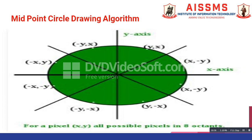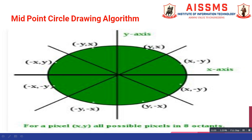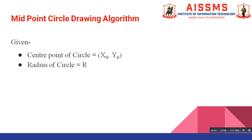This 90-degree part is known as a quadrant. In the midpoint circle drawing algorithm, the center point of the circle is denoted by coordinates x0, y0.